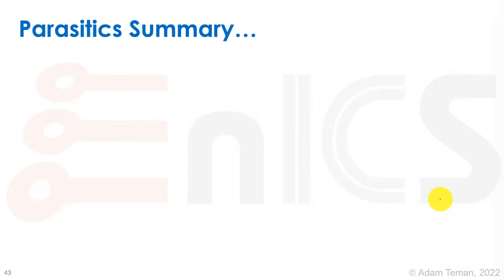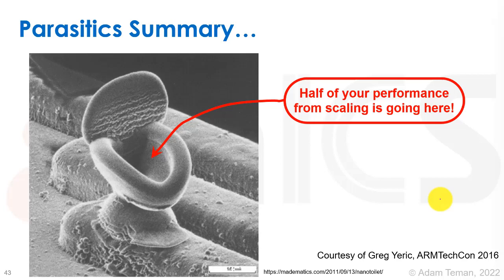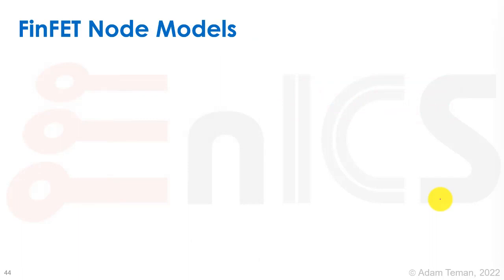As a summary of parasitics — and I love this slide provided by Greg Gerich of ARM — this is the 'nano toilet,' and half of your performance from scaling is really going into it. This is a big problem we have to deal with. Luckily on the digital side we're able to cope, but on the analog side it gives people bad headaches.